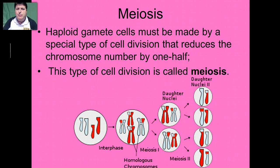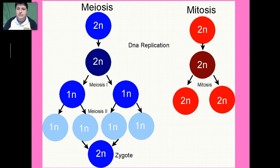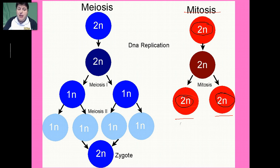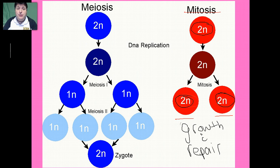In order to produce gametes — cells that have half the chromosome number — we need a specialized type of cell division called meiosis. Meiosis is a process of cell division very similar to mitosis, but there are two distinct differences. Mitosis is a single division producing two cells identical to the original cell. If we start off with a diploid cell, each resulting cell will also be diploid, because we use this process for growth and repair and want all new cells to be identical to the original.